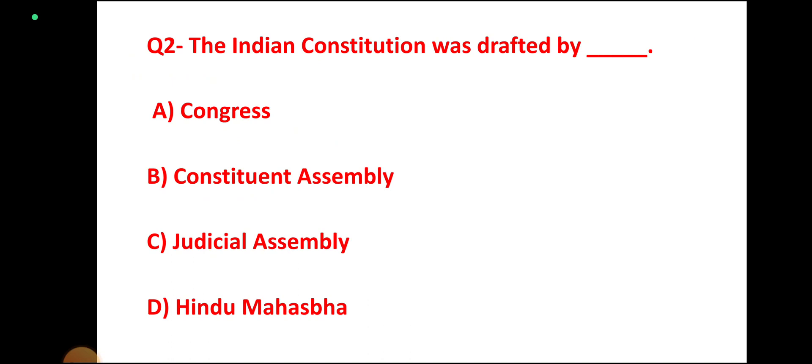Question number 2. The Indian Constitution was drafted by which body? Options: Congress, Constituent Assembly, Judicial Assembly, Hindu Mahasabha. Correct answer: Constituent Assembly. Option B is correct.